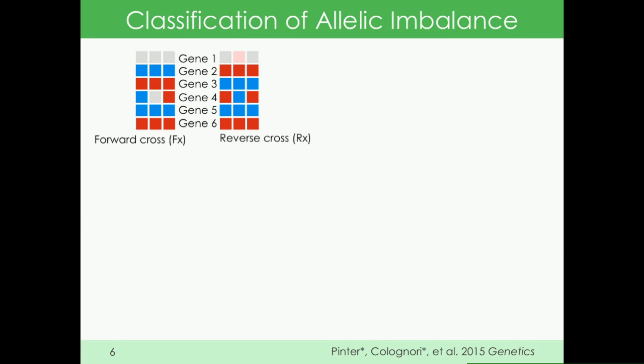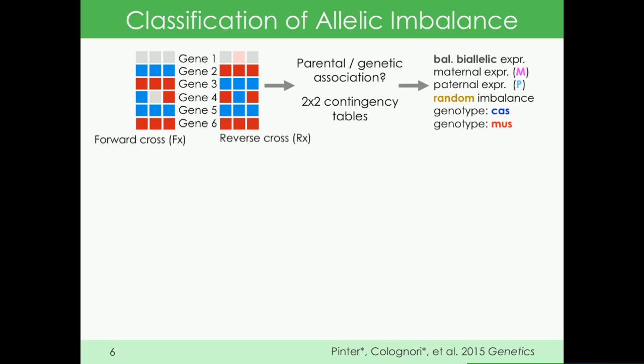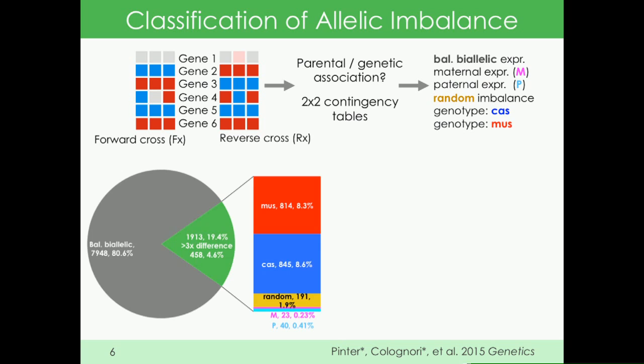I drew a dummy example here—basically you have six genes, and we score each gene in each sample individually. We use these imbalance calls to populate two-by-two contingency tables and determine whether allelic imbalance associates with genetic origin or parental origin. This way we classify these genes.